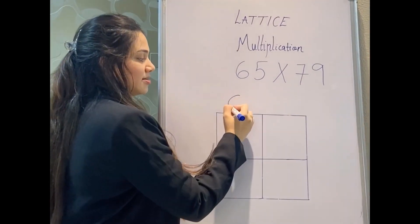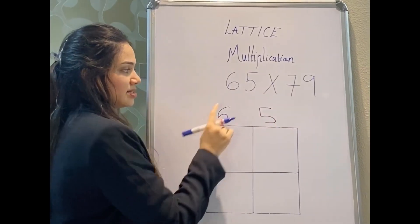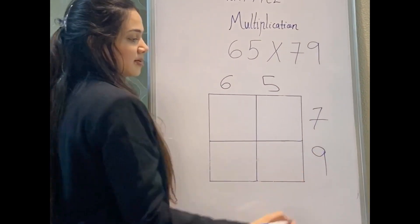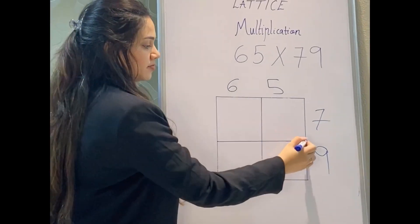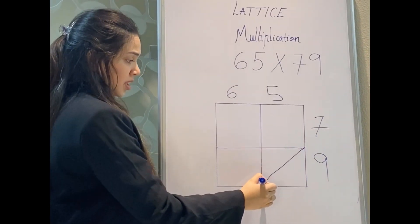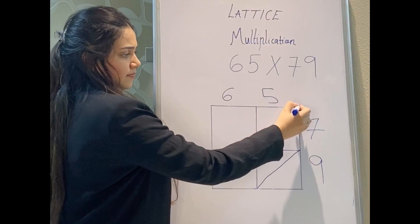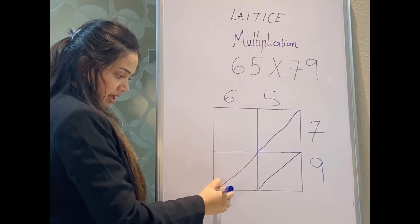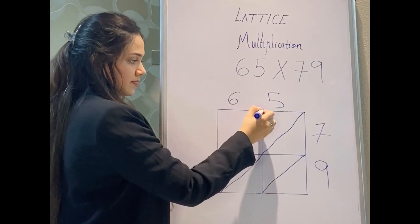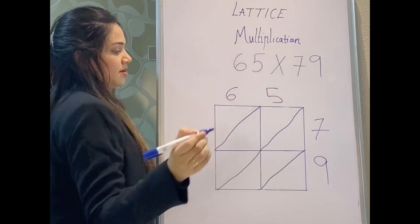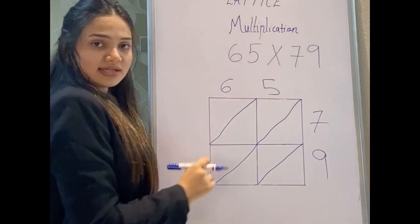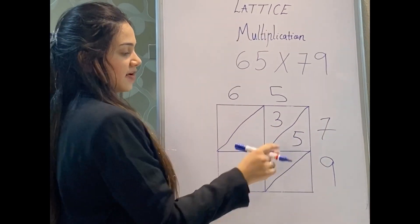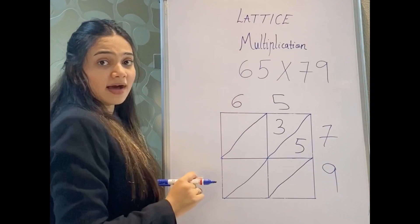Now I'll be multiplying two numbers by two numbers. So I'll write my first two numbers here: 65 and 79. I'll write it here. Then you have to make lattice lines. And over here, this line—make sure that they are both connected here and here.